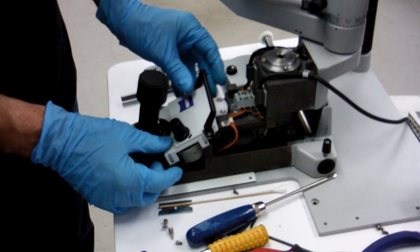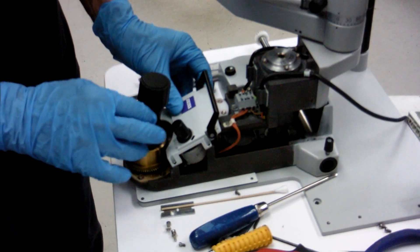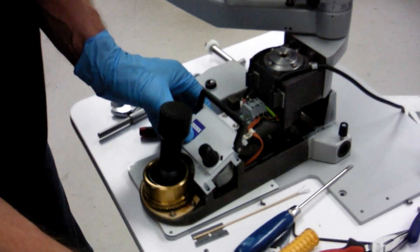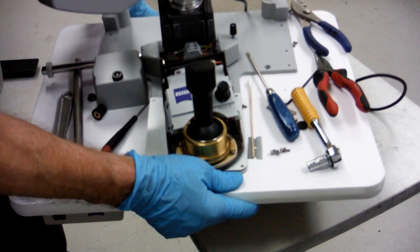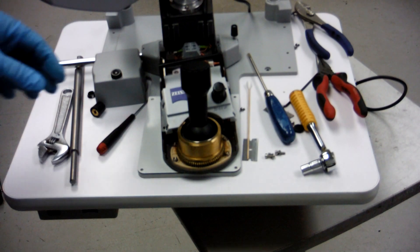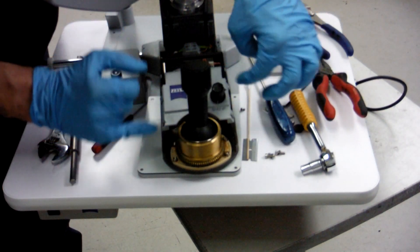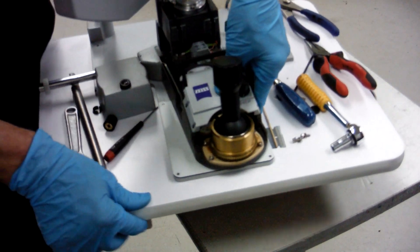Now you have access to your rheostat. Your rheostat housing has four screws. I've already taken them out. And your lock is over here.